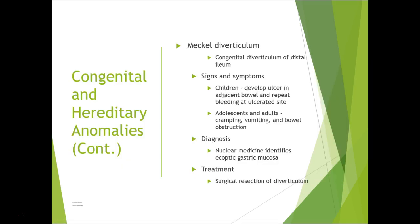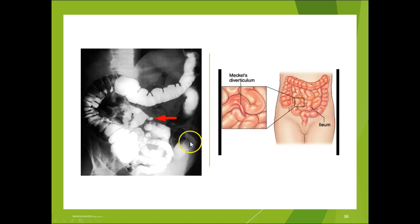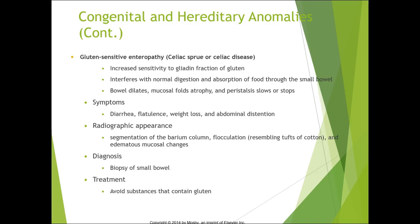Meckel's diverticulum is a congenital diverticulum of the distal ileum. In children it develops ulcers in the adjacent bowel with repeated bleeding at the ulcerated site. In adolescents and adults, symptoms include cramping, vomiting, and bowel obstruction. Diagnosed typically through nuclear medicine or small bowel study — nuclear medicine is especially useful when overlapping bowel obscures it. Surgical resection of the diverticulum is the treatment if it's causing problems.